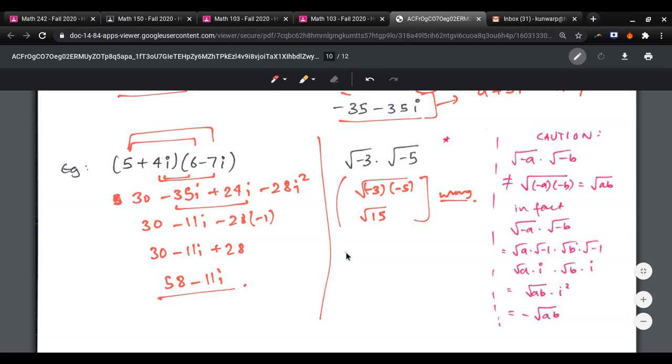In fact, how you want to do this is, this is root 3 times root of negative 1 times root 5 times root of negative 1. But this is root 3i and root 5i. That's root 15i squared, so it's actually negative root 15. And that's because we're working with complex numbers here. So we have to be careful that we do not apply the incorrect operation here.